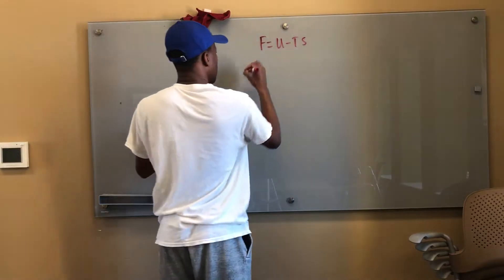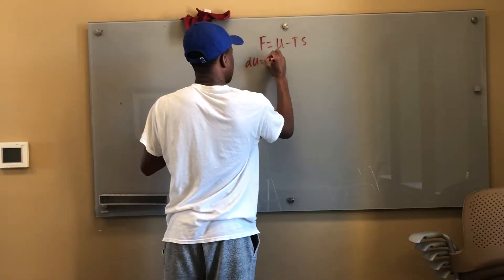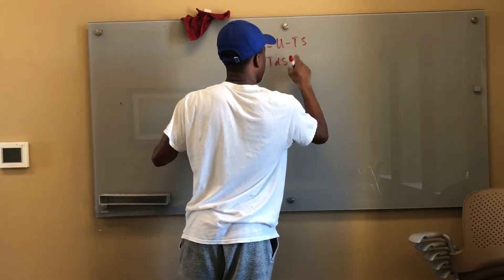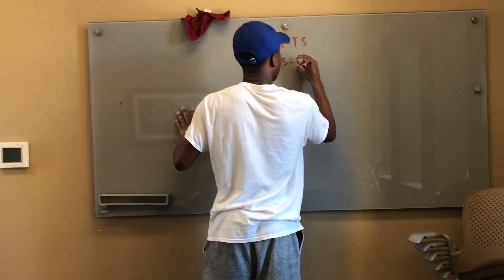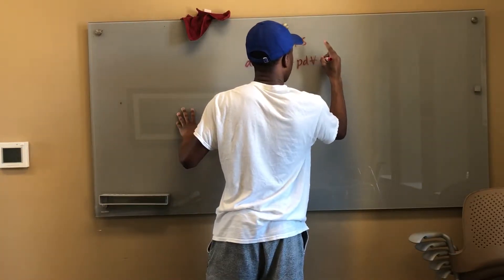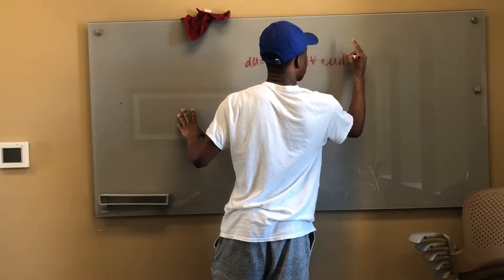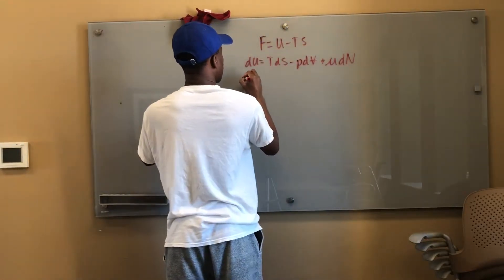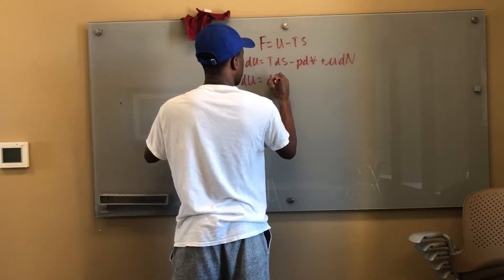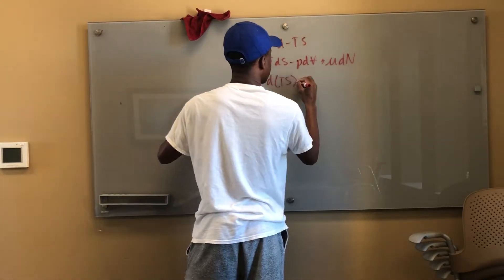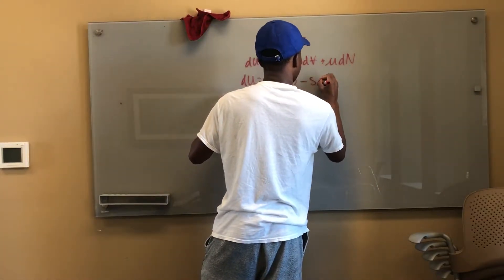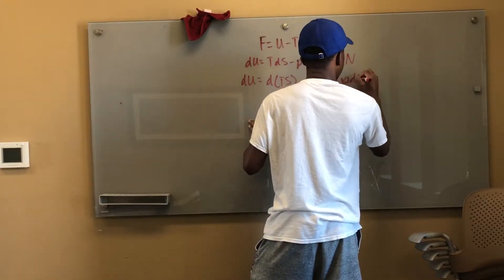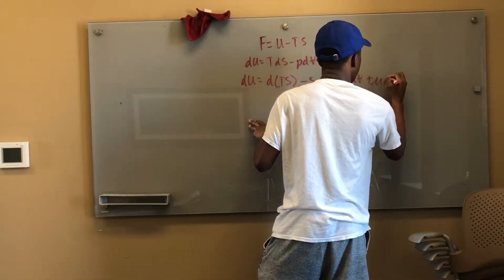And we know how to get this, right? We start off with our basic combined first and second law. I'm just going to say it's a one-component system. So DU is equal to TDS minus SDT minus P DV plus mu DN.